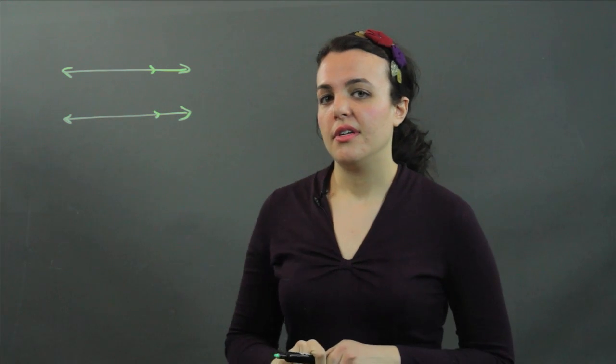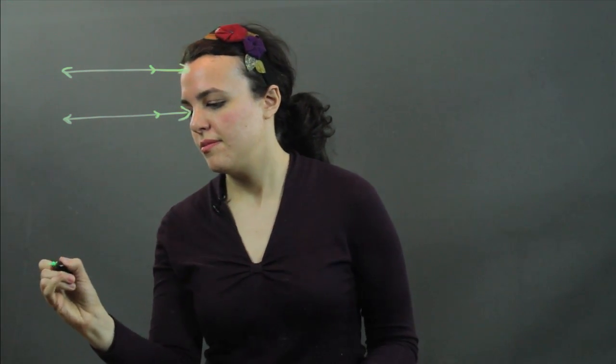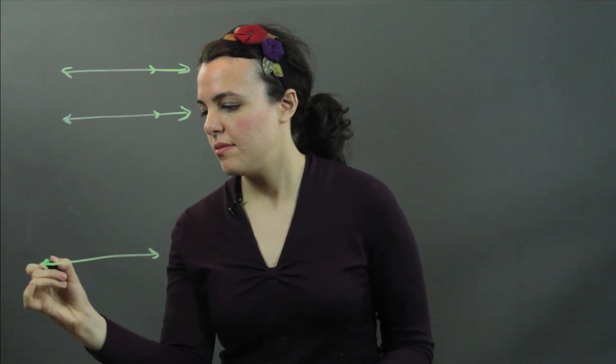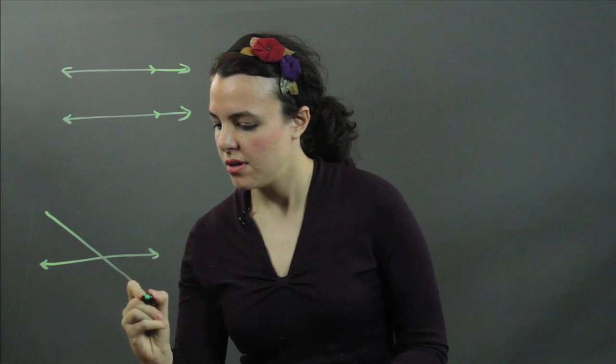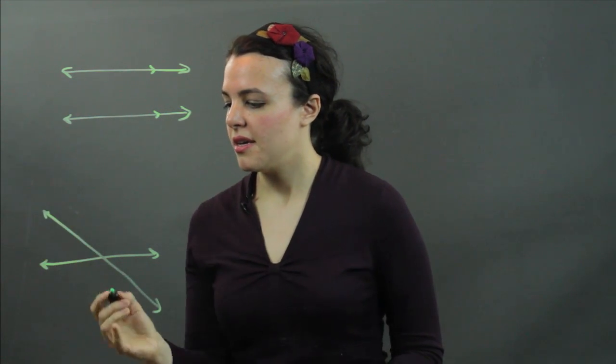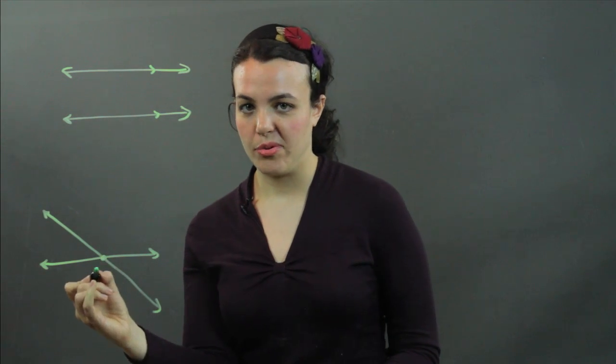Now, if you have two concurrent lines, by definition, they are two lines that intersect at exactly one point.